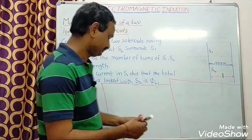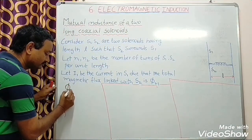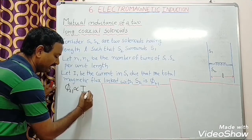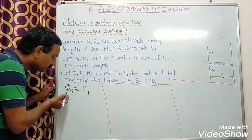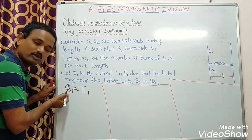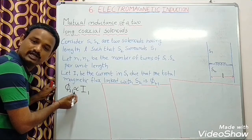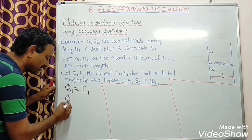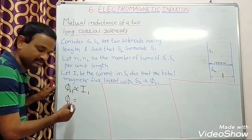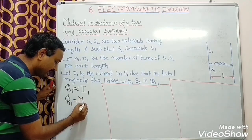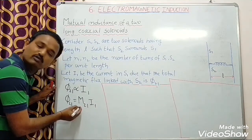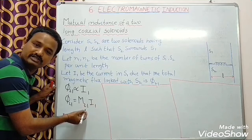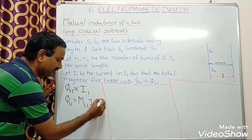So, here I can write that Φ21 is directly proportional to the current flowing through solenoid S1. That means, total magnetic flux linked with solenoid S2 is directly proportional to the current flowing through solenoid S1. If I remove the directly proportional sign, I need to write a constant. That constant I will write as M21 into I1. M21 means mutual inductance of solenoid S2 with respect to solenoid S1. So, this I will consider as equation 1.